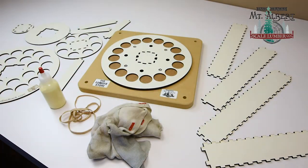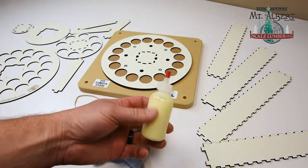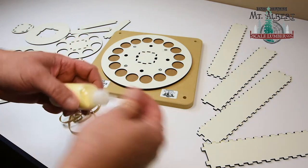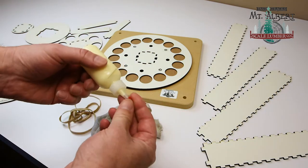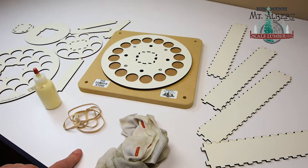There isn't much required: a little bit of wood glue. These little glue bottles that we sell are pretty handy, you can fill them up with your favorite wood glue. It dispenses a nice small bead of glue, a wet cloth, and a few rubber bands to hold things together while the glue sets up.